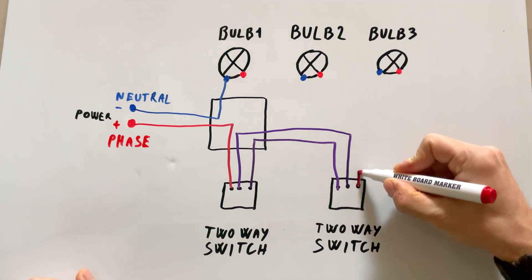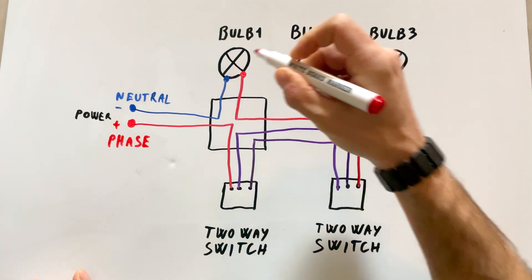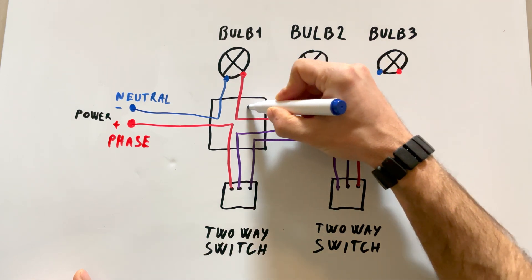From the second switch, we run a wire to the bulb. To add more bulbs to the circuit, you can connect them directly from the junction box.